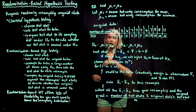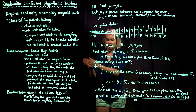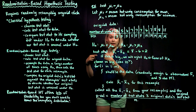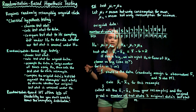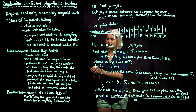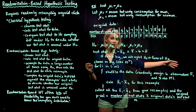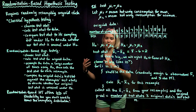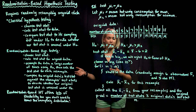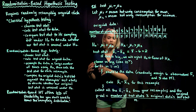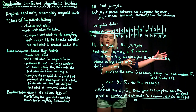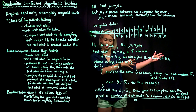We resample the data, calculate the test statistic, and store it away. Then we resample again, calculate the test statistic, and store it away again. We do this over and over — maybe a thousand or ten thousand times — so that we have a thousand or ten thousand test statistics built under the null hypothesis.